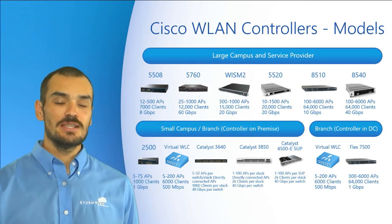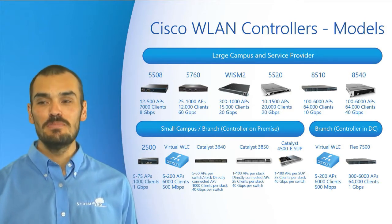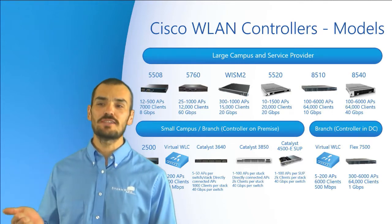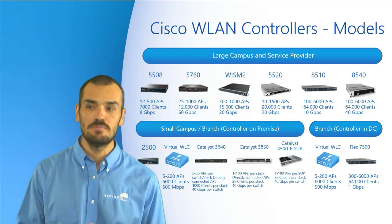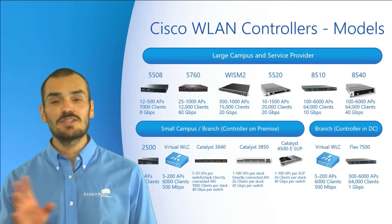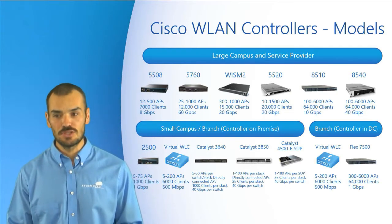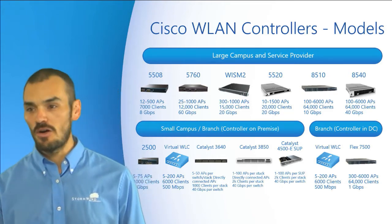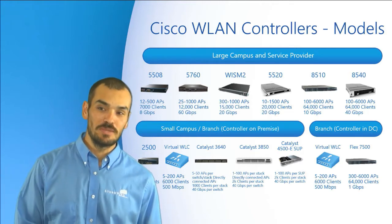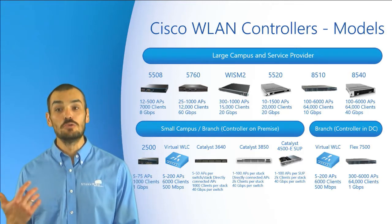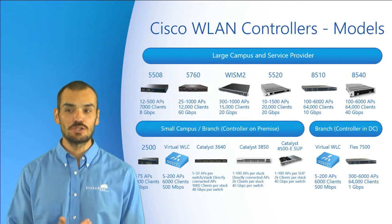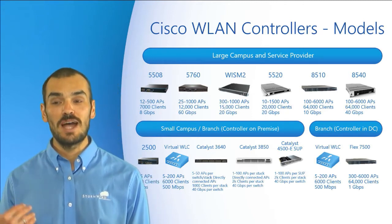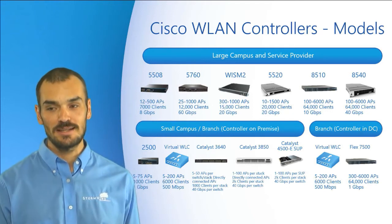The 2500 series is once again intended for small to mid-sized deployments. It supports 75 access points in FlexConnect, Mesh, or Office Extend modes, 500 tags, and 1,000 clients at 1 gigabit per second throughput. We get CleanAir, LAG, RRM, DTLS, VideoStream, Guest Services, ABC, and Bonjour as supported special features. On this particular model, two of the four ports will provide PoE to its connected access points.